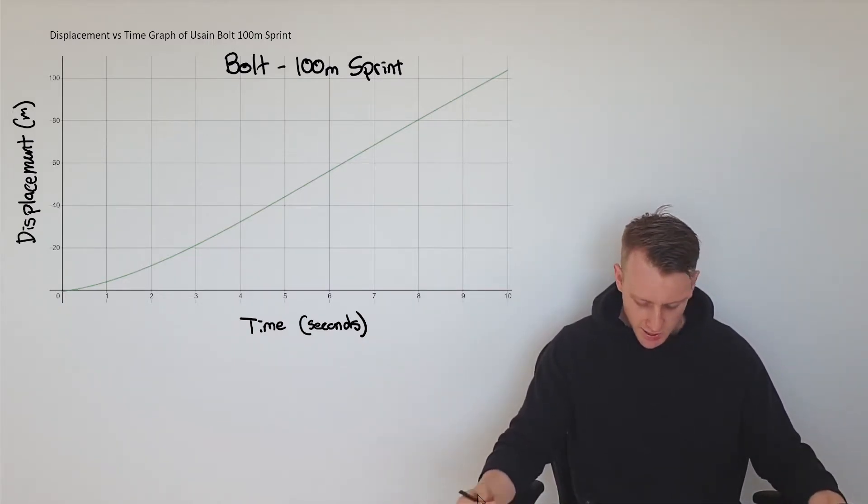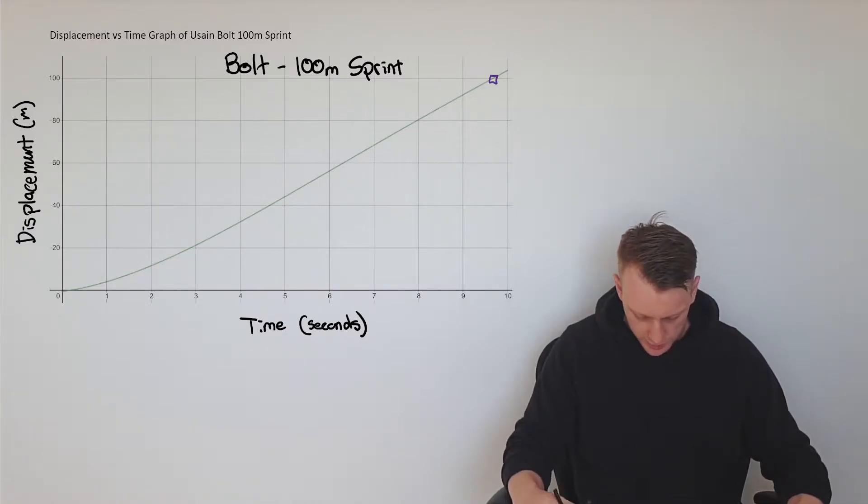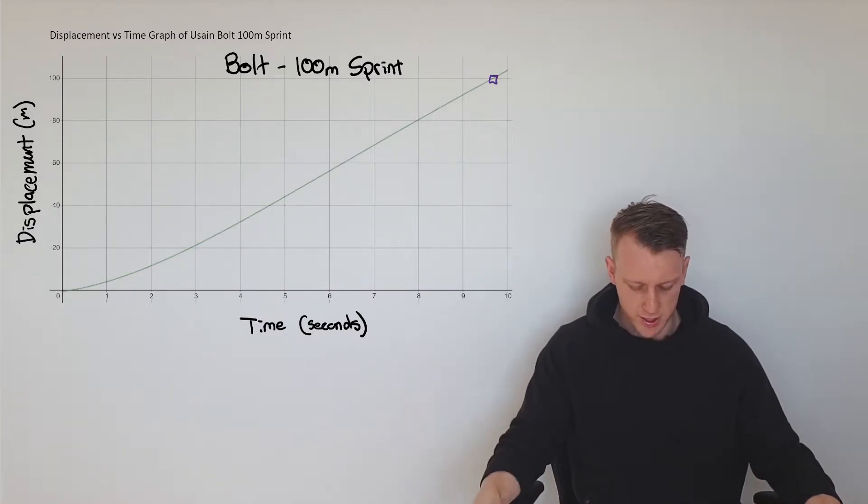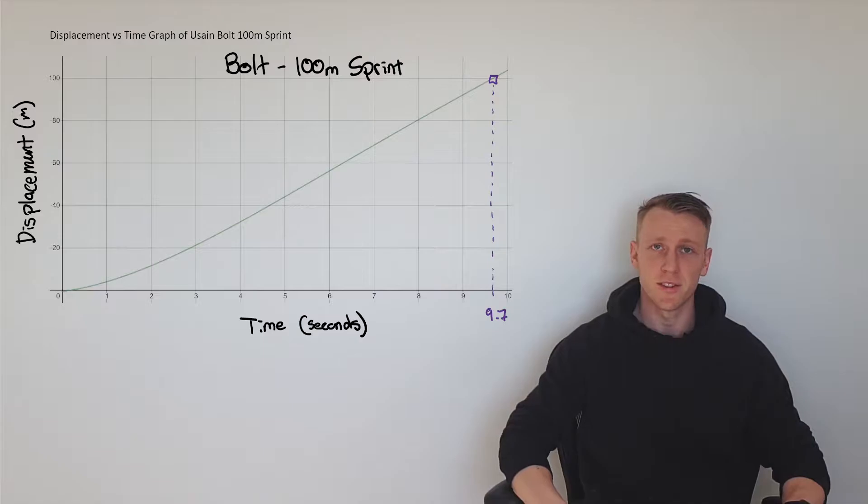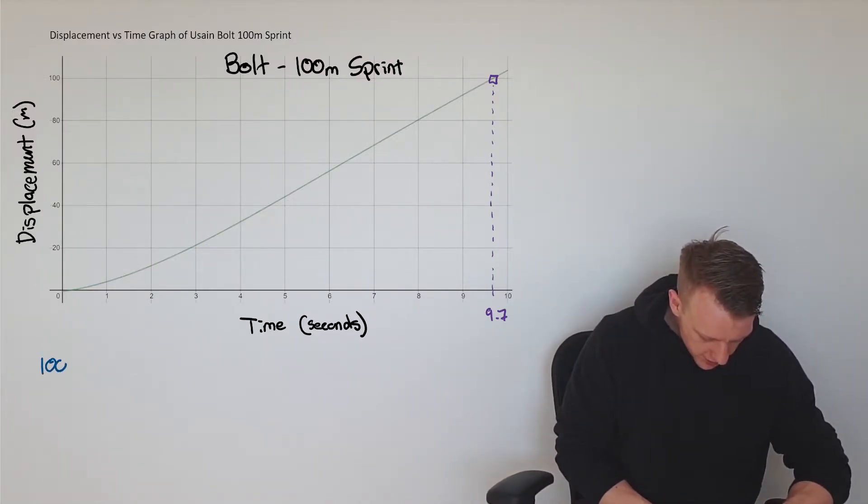We can see he finishes the race at about here, and that's about 9.7 seconds. So it takes about 9.7 seconds to finish the race. We'll write that down: he runs 100 meters in 9.7 seconds.